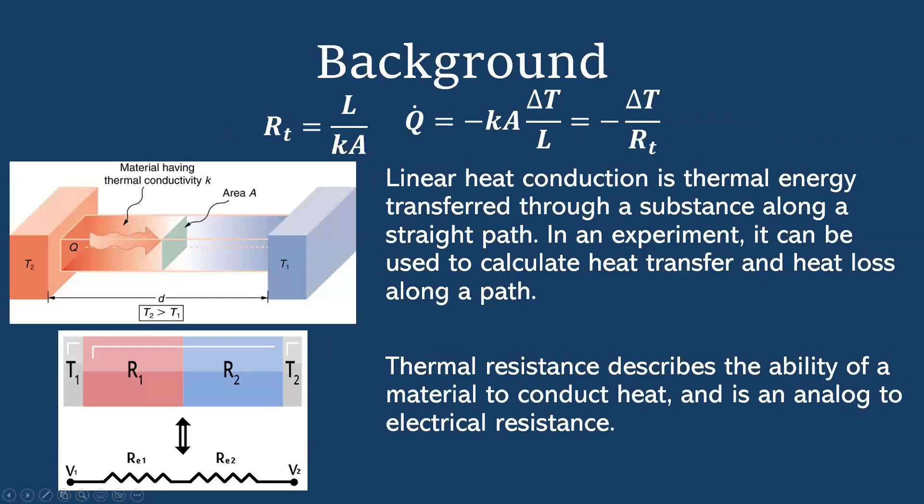Some background is that linear heat conduction is thermal energy transferred through a substance along a straight path. In an experiment, it can be used to calculate heat transfer and heat loss along a path. Thermal resistance describes the ability of a material to conduct heat and is an analog to electrical resistance. At the top, we have the equation for thermal resistance and for heat transfer, which can be written in terms of thermal resistance, and on the left are a couple of pictures that describe these concepts.